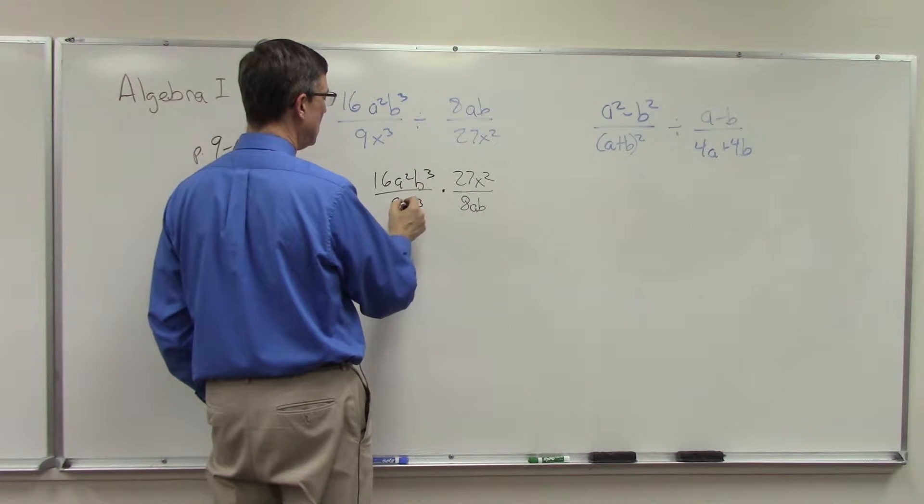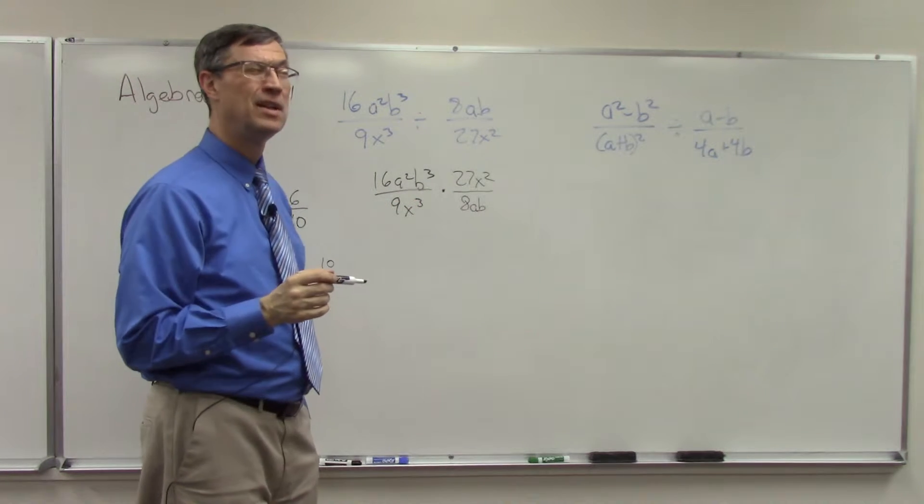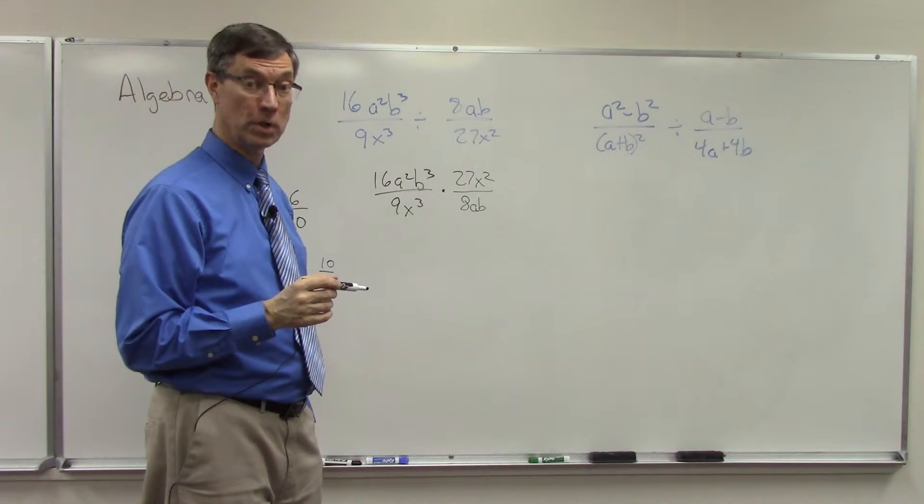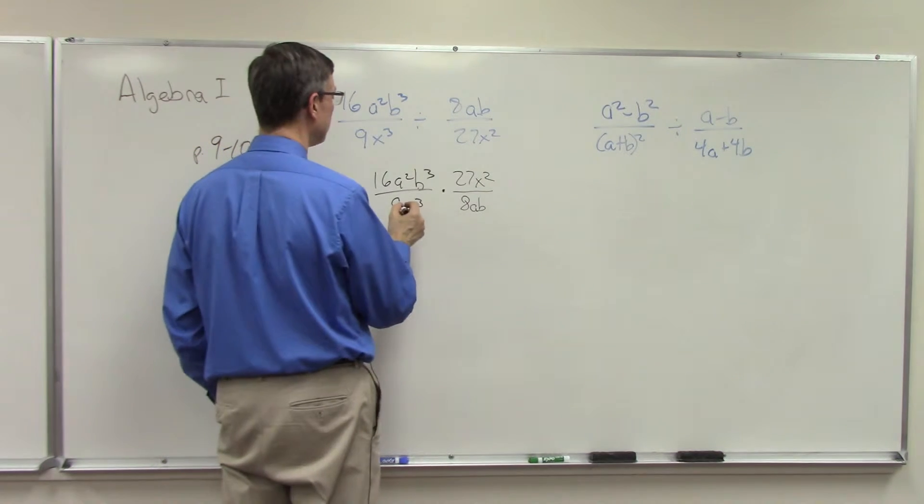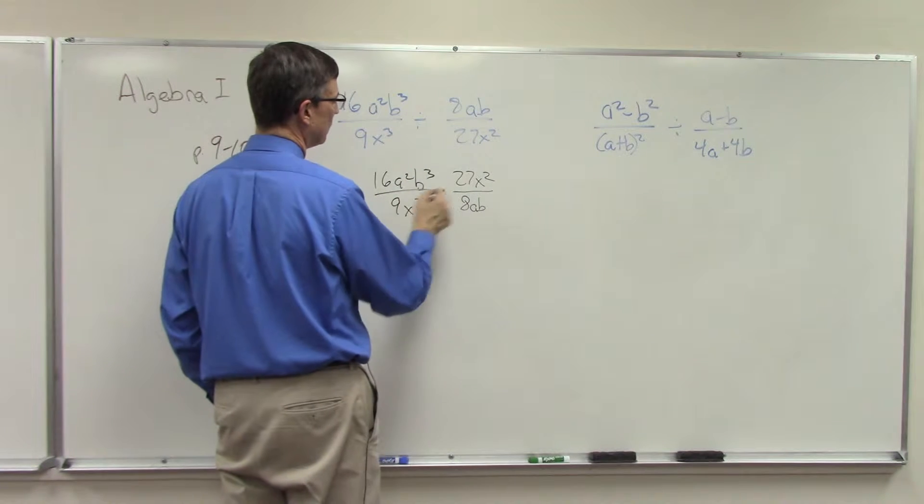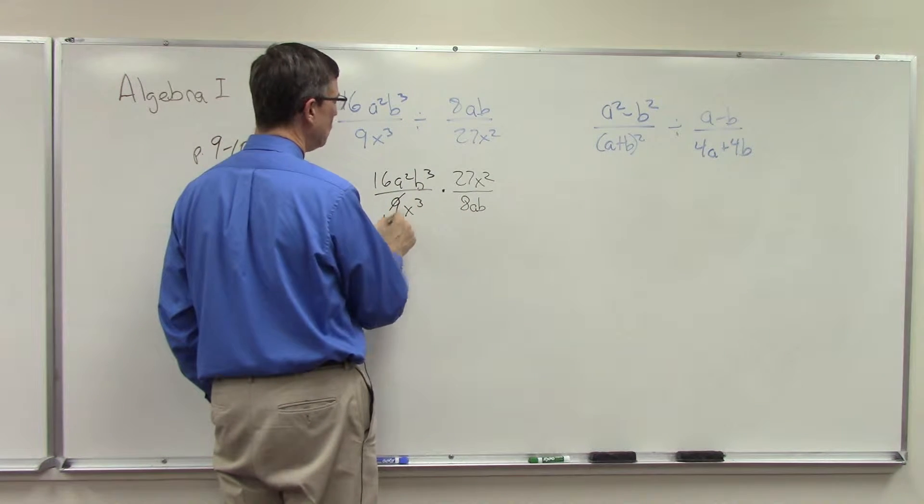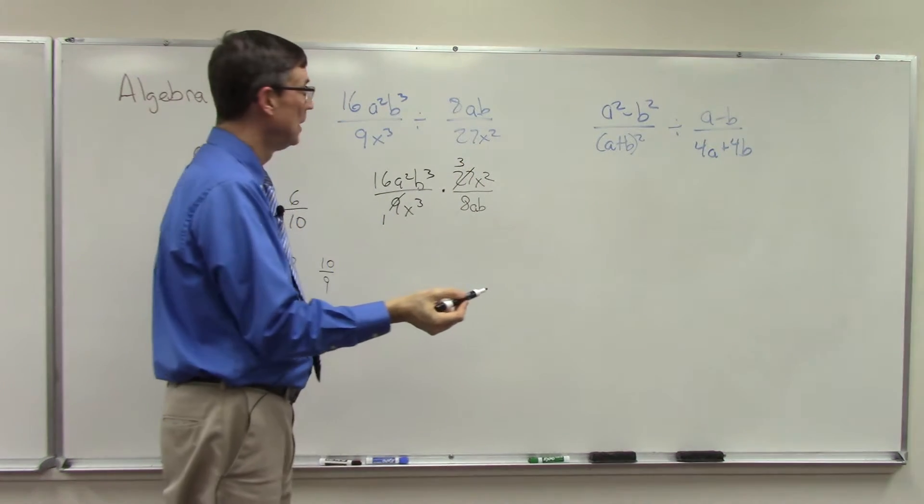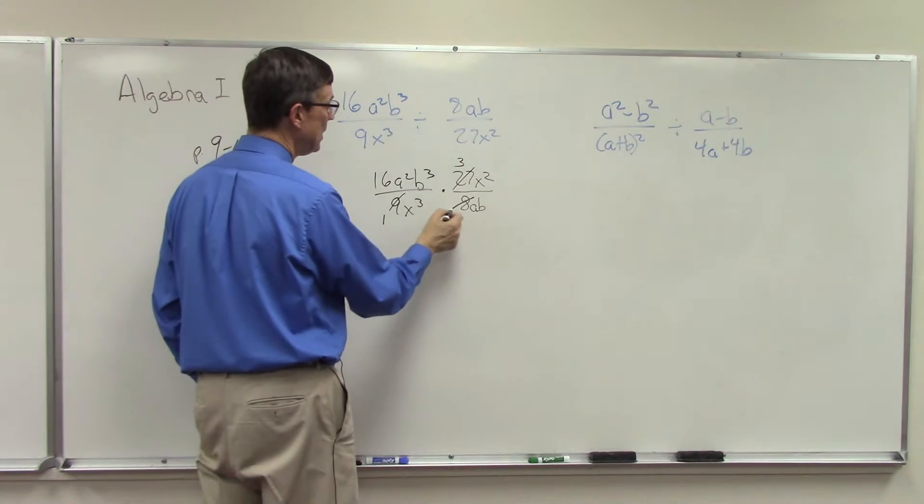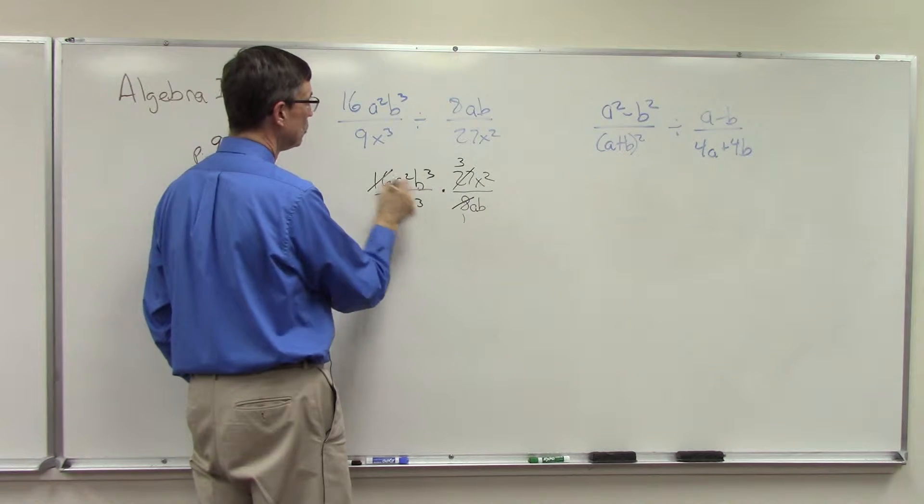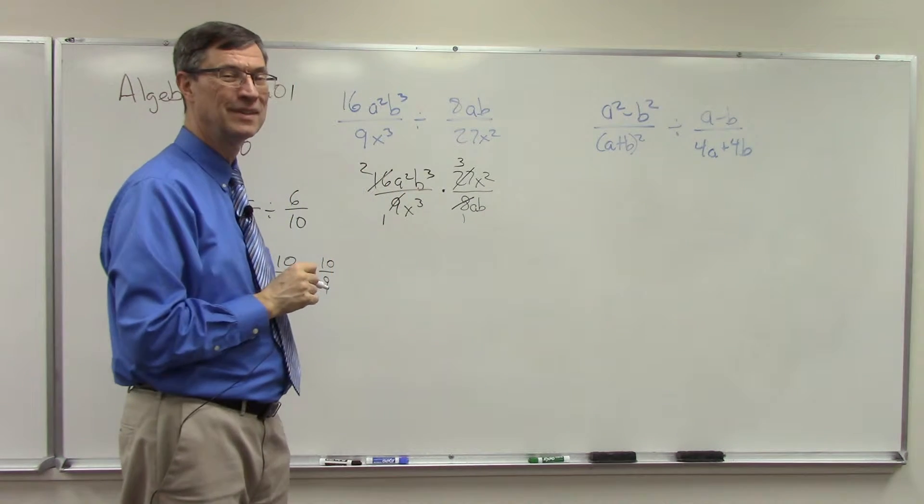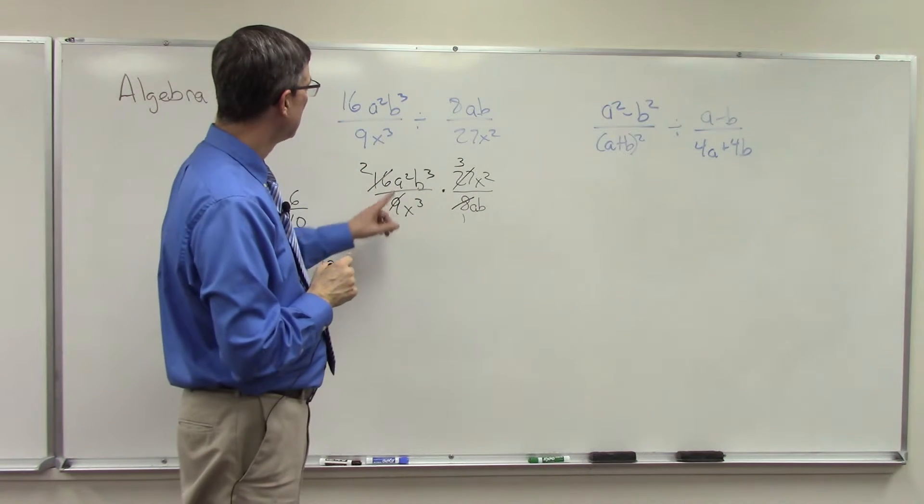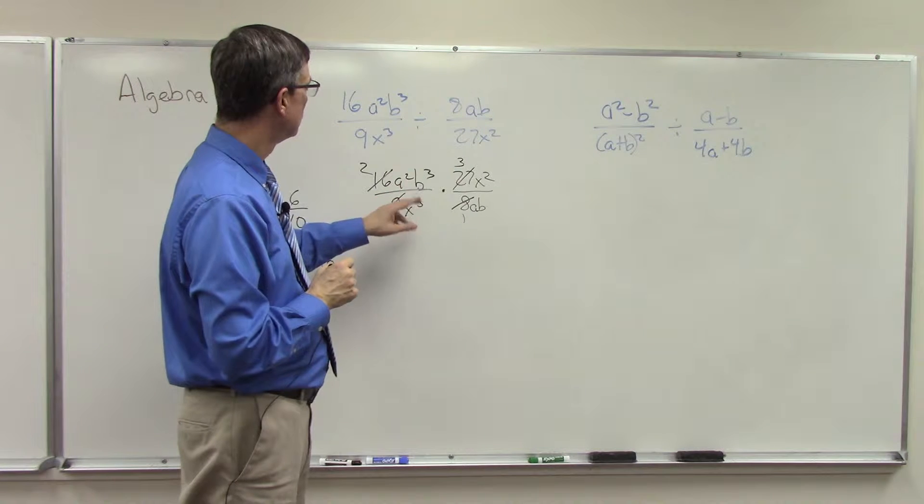Let's look first at the number parts here. I'm seeing 27 and 9—they're both divisible by 9. So 9 divided by 9 is 1, 27 divided by 9 is 3. Let's go this way: can we cancel the 8 against the 16? Sure, we get 2 and 1.